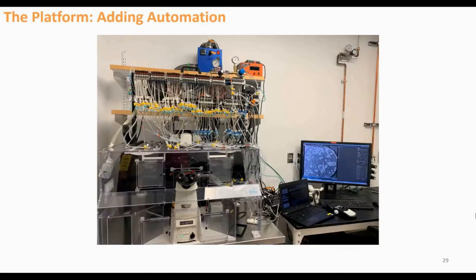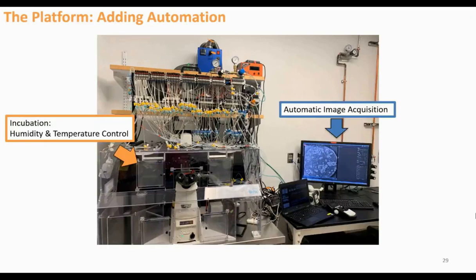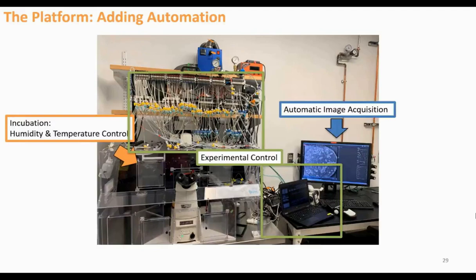Now that we have our home for our organoids, we needed to design a system to automatically provide growth nutrients and experimental stimulants. Here's an example of a typical microfluidic setup. First, we have our built-in incubator to keep our organoids alive and happy for the entire duration — I've done experiments for over two weeks with the organoids happy the entire time. We also have automatic and programmable image acquisition, and then the main part of the microfluidic system: experimental control. This is controlled by a separate computer connected to an array of solenoid valves that control the movement of fluids through a pressurized valve system — what we call microfluidic valves.